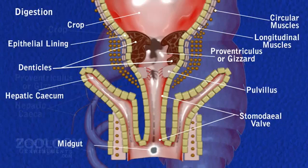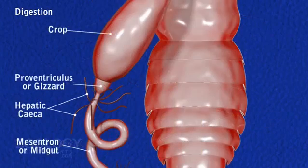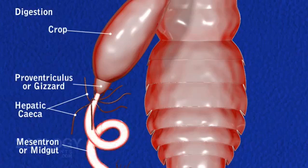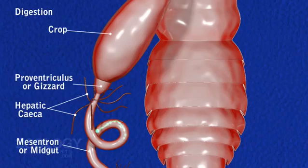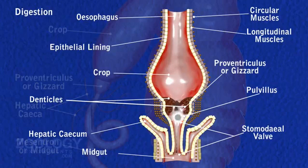In the midgut, partly digested food is mixed with enzymatic secretions of the epithelial secretory cells of the enteric caeca and midgut itself. These secretions contain a trypsin-like enzyme and peptidase that digest protein, amylase that completes digestion of starch, and lipase that digests fat. A thin, transparent, cutaneous peritrophic membrane lines the midgut internally in the form of a tube.